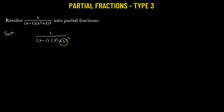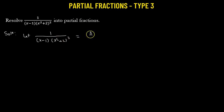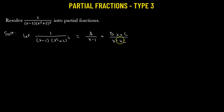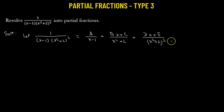This immediately tells us that we can resolve the given rational fraction into three partial fractions. The first partial fraction is A over x minus 1. Then we have Bx plus C divided by x squared plus 2, since x squared plus 2 is a quadratic factor, its numerator must be in linear terms. Then we have Dx plus E divided by x squared plus 2 squared, since x squared plus 2 repeats twice. Our goal is to find the values of A, B, C, D, and E.